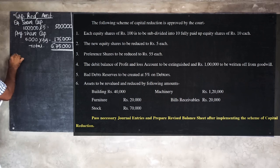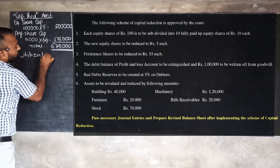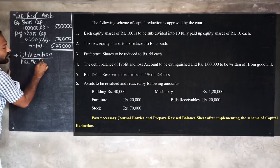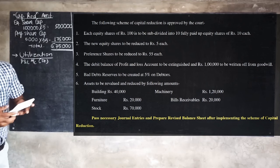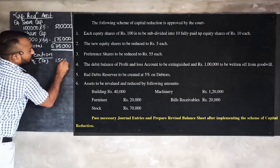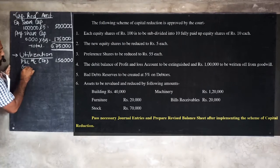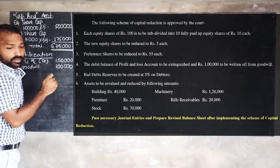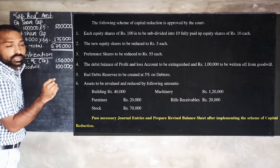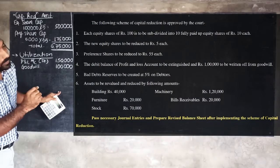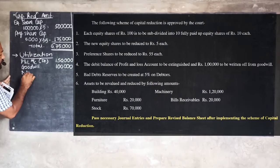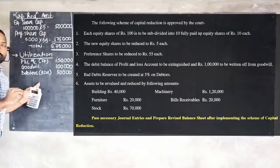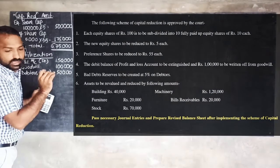Step 2: calculate utilization of capital reduction amount. First, we are utilizing for writing off the profit and loss account debit balance of rupees 1 lakh 50,000. Next, goodwill is to be written off — rupees 1 lakh. Then, bad debt reserve to be created at 5% on debtors: debtors amount to 10 lakhs, so 5% of 10 lakhs = rupees 50,000. Then we have reduction in other assets.